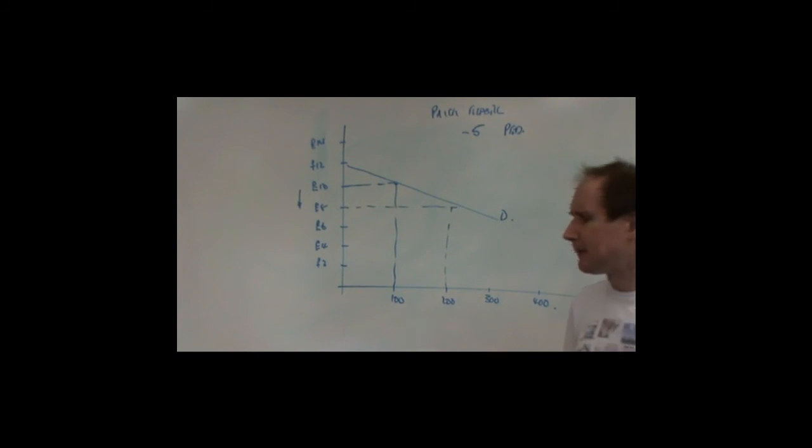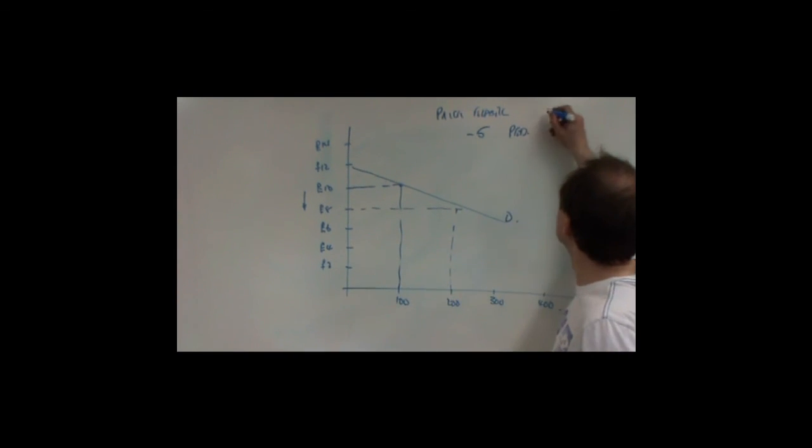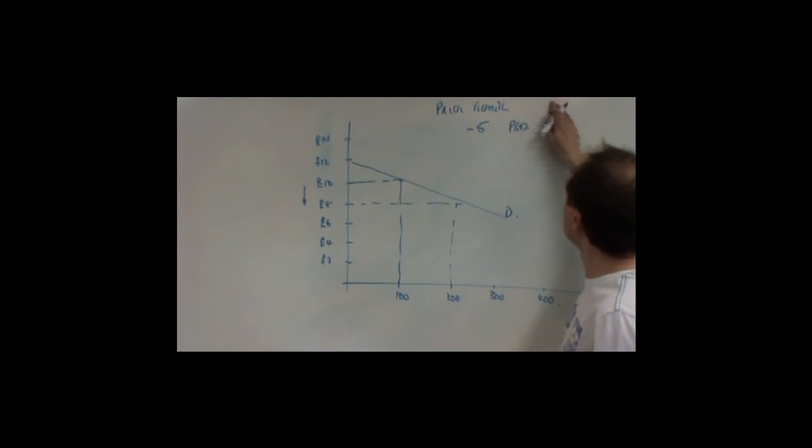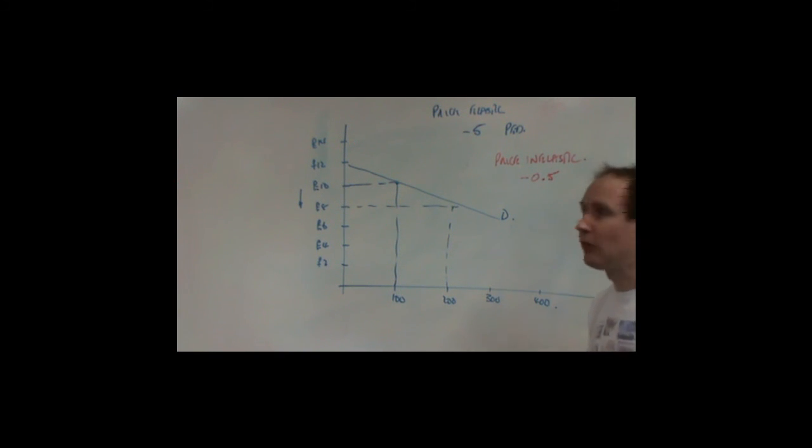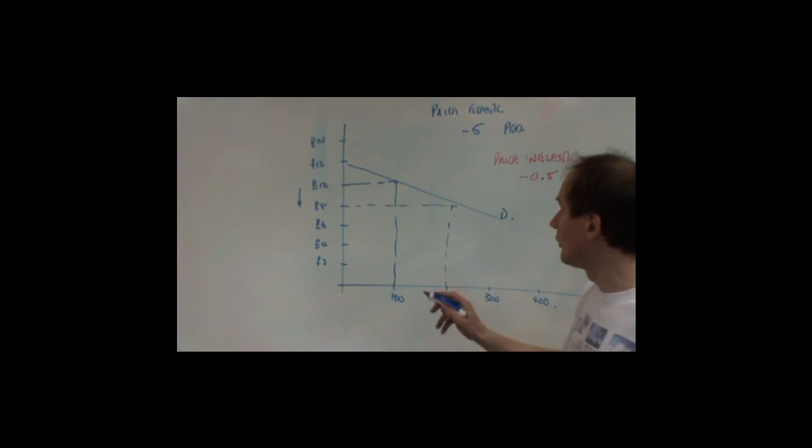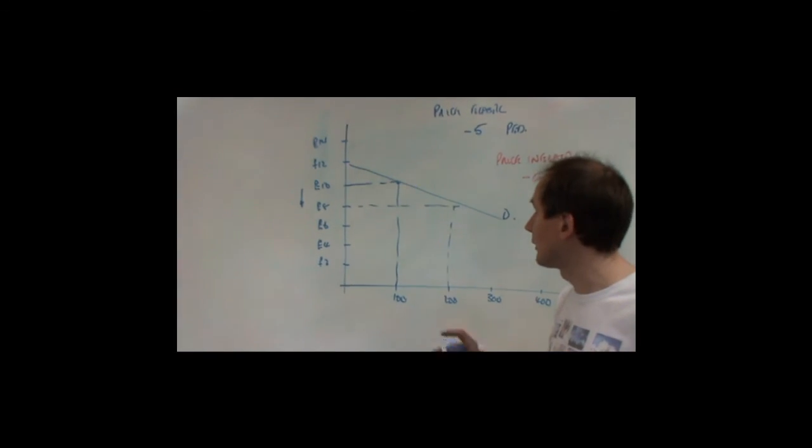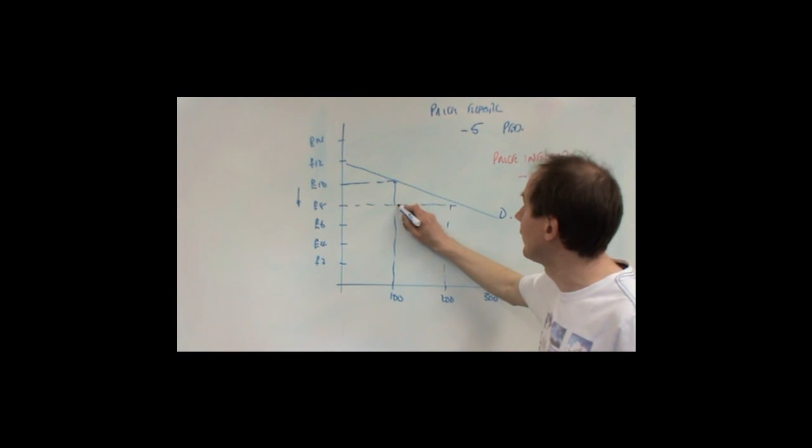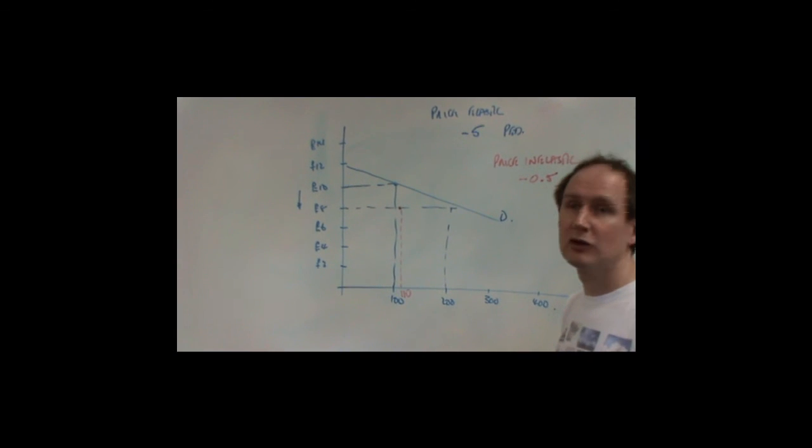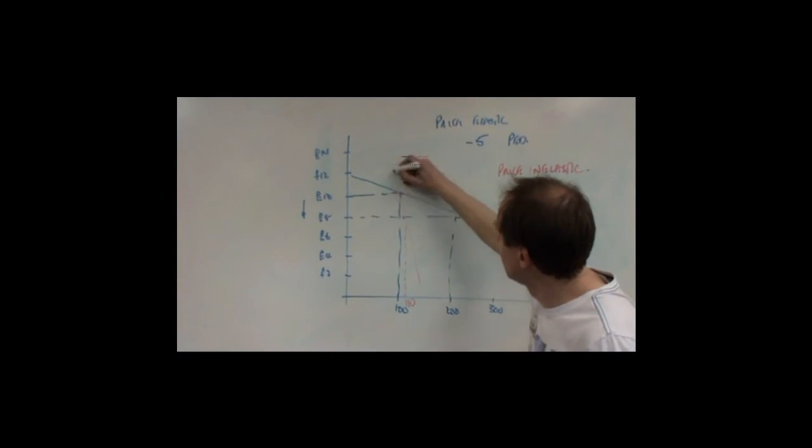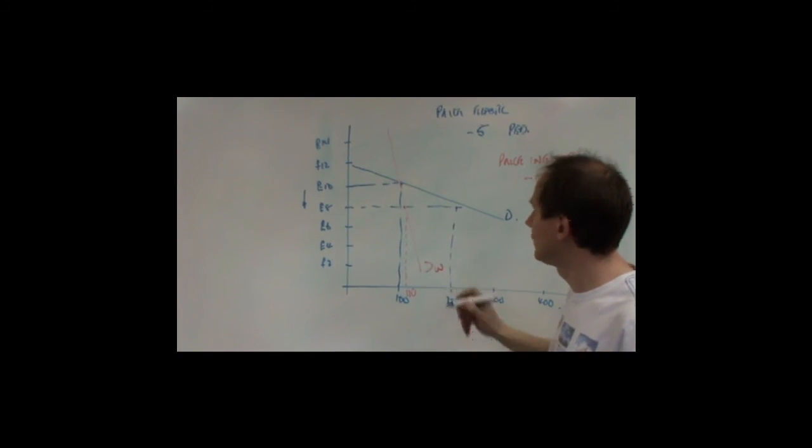Suppose on the other hand that demand had been price inelastic. So price elasticity of demand had only been, say, minus 0.5. Now, the 20% change in price would have meant that demand only went up by half as much, only went up by 10%. That would have meant that when price fell to £8, demand would have only risen to 110. And it would have had a very different demand curve.